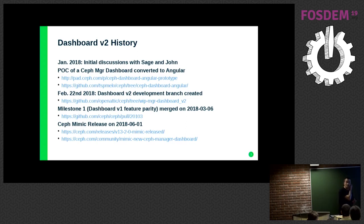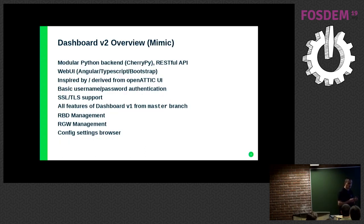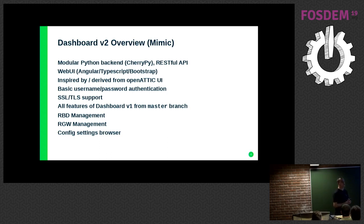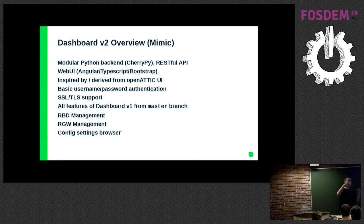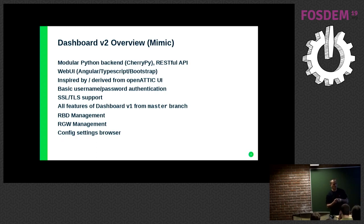The first official Dashboard v2 release was with the Mimic release in June last year. That included all the functionality of the original read-only dashboard plus additional features we were able to finish within the six-month timeframe: SSL/TLS, a way to define a username and password to protect the dashboard, some management of Ceph objects, block devices, object gateway management, and configuration settings browsing — plus a completely new UI design and layout.